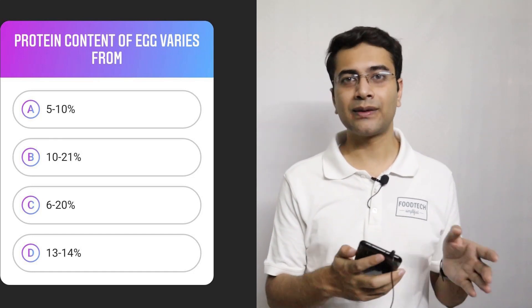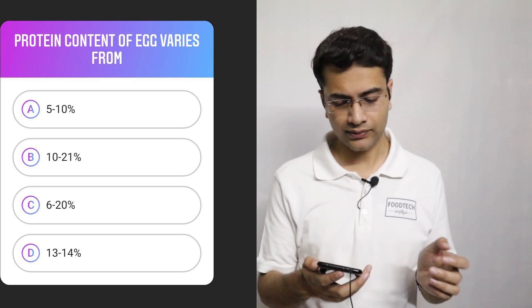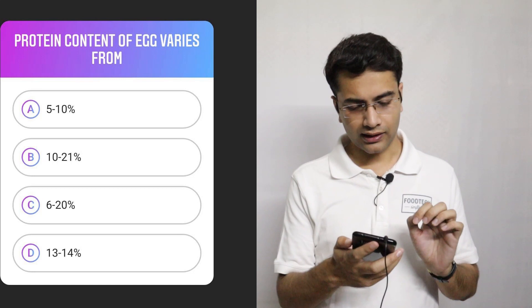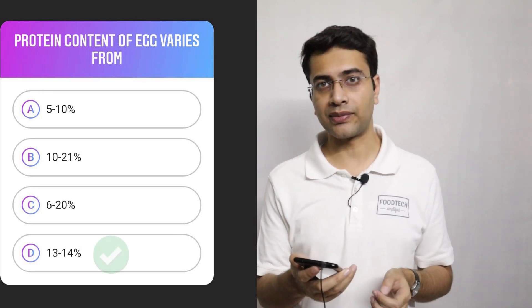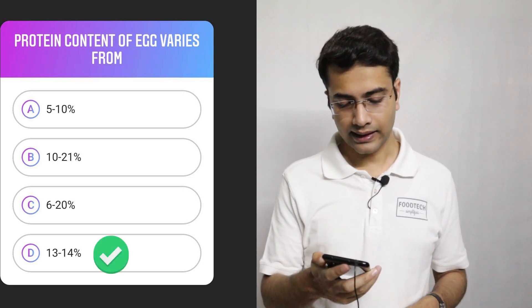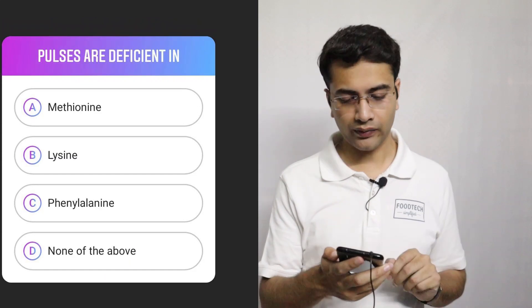There are a lot of factors. But usually the usual range of protein in eggs is 13 to 14%. Option D is the correct answer. If this option said 12 to 14%, that would also have been correct.